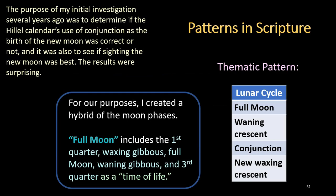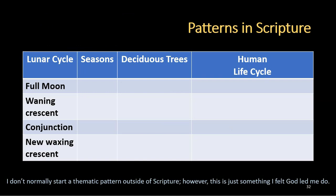The results were really surprising to me. For our purposes, I created a hybrid of the moon phases. Full moon includes the first quarter, waxing gibbous, full moon, waning gibbous, and a third quarter as a 'time of life.' I set up my chart with this being the original pattern. I do not normally start a thematic pattern outside of Scripture, but for this project this was something I felt God led me to do. For the lunar cycle, we see the full moon, we see a waning crescent, then conjunction, and then we see the new waxing crescent.